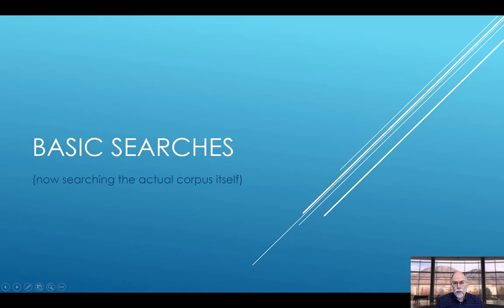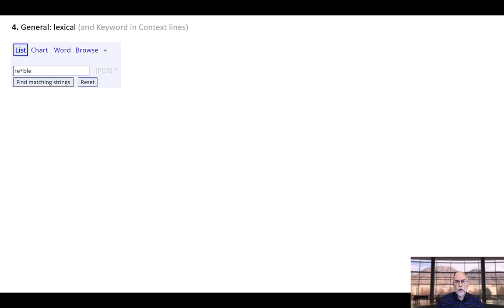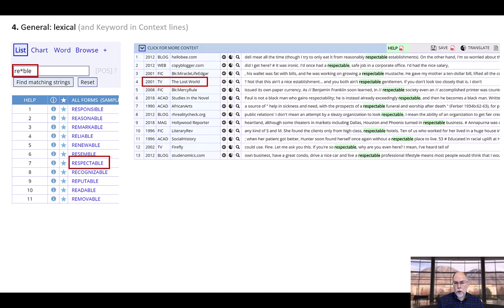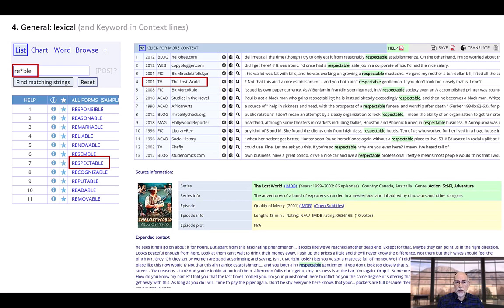Up to this point, we have searched for information on one specific word, or we have searched through carefully edited word lists. From this point on in the video, we'll discuss how you can search the corpus itself, and not just word lists. For example, you can search for words starting with RE and ending in BLE. You see a list of the matching words, and then you can click on any word or phrase to see it in context, and then even more context — up to about 200 words of context.